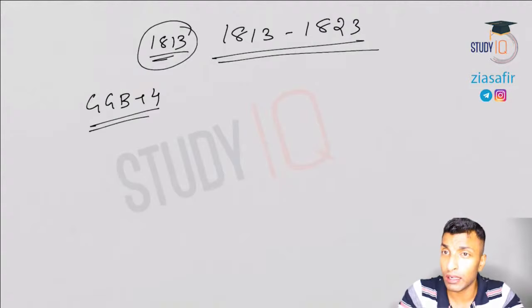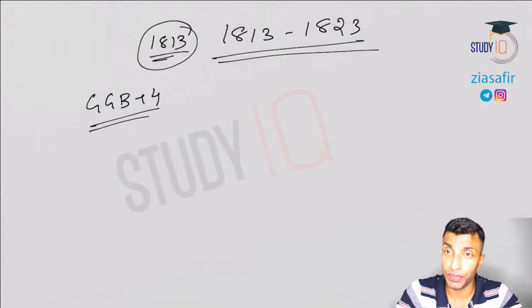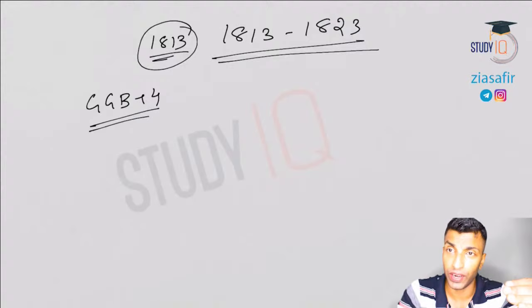We also talked about the revenue settlement tried by Lord Warren Hastings, including the five-year settlement and the one-year settlement. Then we discussed one of the most important Governor Generals — Lord Cornwallis. Lord Warren Hastings' period was from 1773 to 1785, and then comes Lord Cornwallis, whose period was 1786 to 1793.